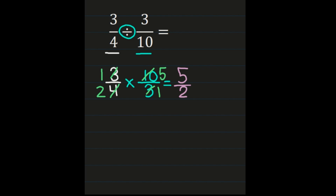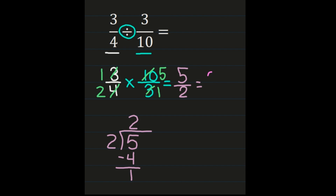If you can leave your answer as an improper fraction, you are finished because 5/2 does not simplify further. If you can turn 5/2 into a mixed number without showing your division steps, you're welcome to do so. I'm going to go ahead and show all of the steps: take the numerator and divide it by the denominator. 5 divided by 2 is 2. 2 times 2 is 4, and 5 minus 4 is 1. My quotient becomes my whole number — a whole number of 2. My remainder of 1 becomes my numerator, and my denominator of 2 remains the same, for a final answer of 2 and a half.